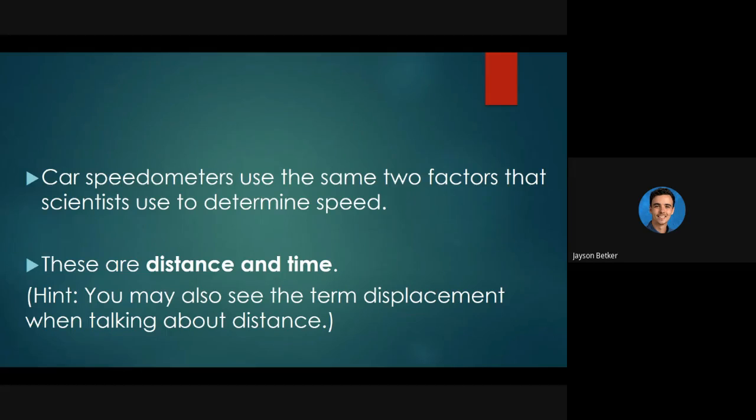What is the speedometer specifically telling us? It's telling us our speed, but what is it telling us our speed in terms of? What does speed actually mean? There's two factors that we as scientists use to determine speed: distance, how much distance we're covering in a given amount of time. You look at the speedometer and it tells you that you're going 50 kilometers per hour. That means for every hour you're going to go 50 kilometers.